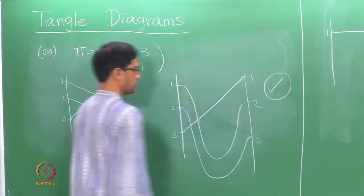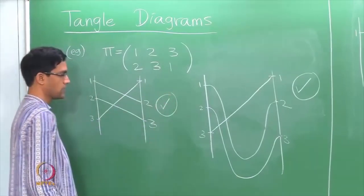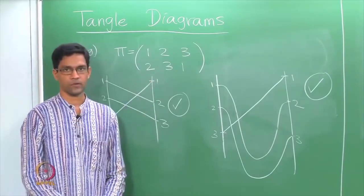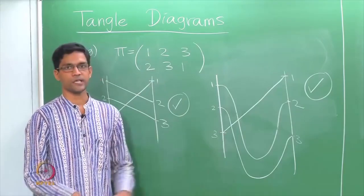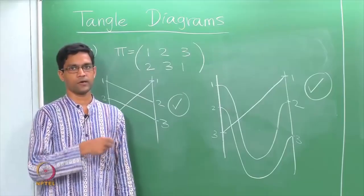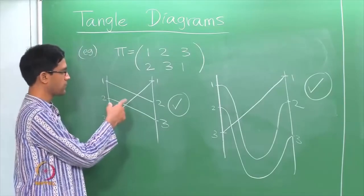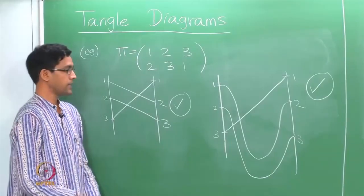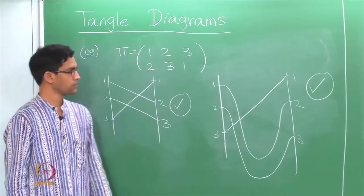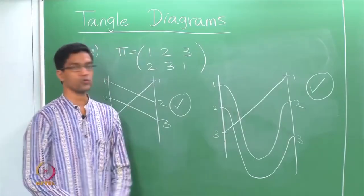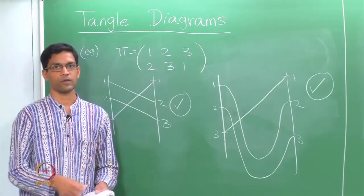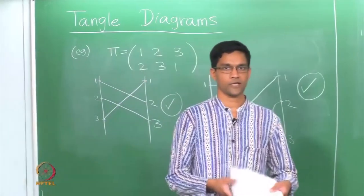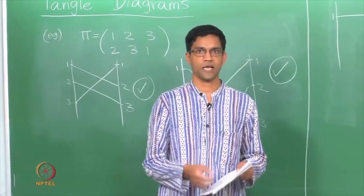Both of these are valid tangle diagrams depicting the 3-cycle permutation. It is good to have the flexibility to draw it in various ways, not always by straight lines. There will be situations where you want to see proofs pictorially, and more flexibility in drawing tangle diagrams is useful. These are the various rules to keep in mind when you encounter or draw tangle diagrams. Next time we will use this to understand the notion of sign.